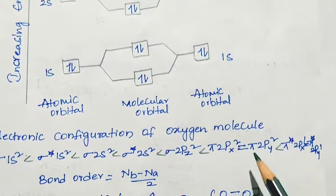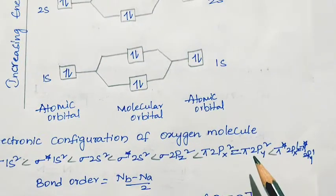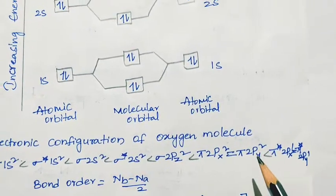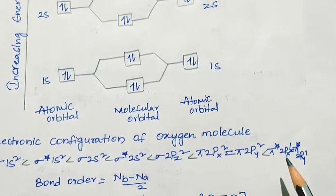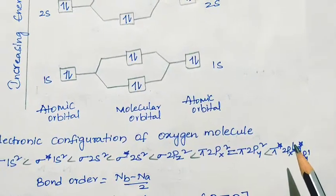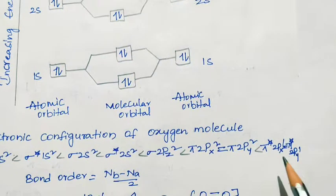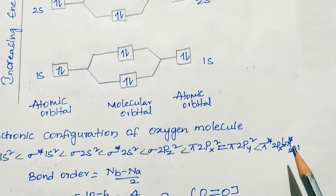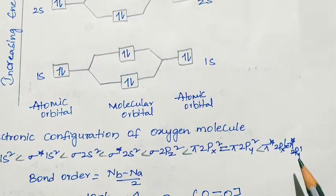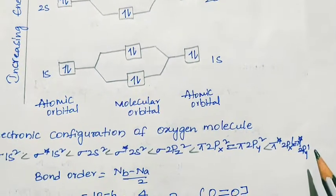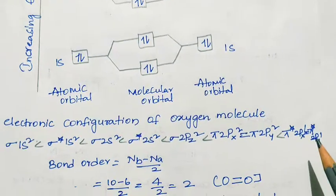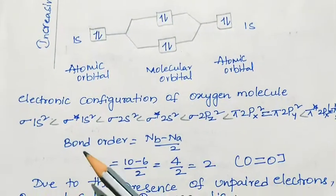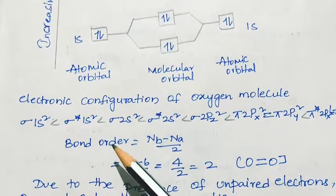Both π2px and π2py are of the same energy: π2py², then π*2px¹ with 1 electron, and π*2py¹ with 1 electron. So there are 2 single unpaired electrons present.